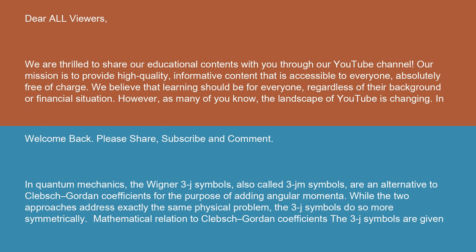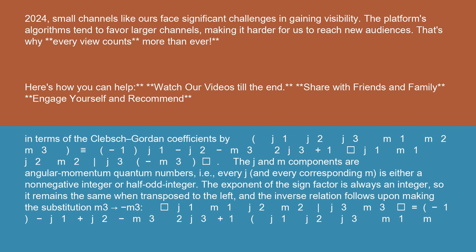Mathematical relation to Clebsch-Gordon coefficients: the 3j symbols are given in terms of the Clebsch-Gordon coefficients by (j1 j2 j3; m1 m2 m3) is identical to minus 1^(j1 - j2 - m3) * (2j3 + 1)^(-1/2) * <j1 m1 j2 m2 | j3 -m3>. The j and m components are angular momentum quantum numbers, i.e., every j and every corresponding m is either a non-negative integer or half-odd integer. The exponent of the sign factor is always an integer, so it remains the same when transposed to the left, and the inverse relation follows upon making the substitution m3 → -m3.